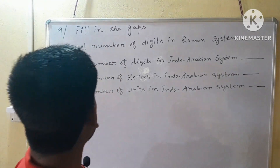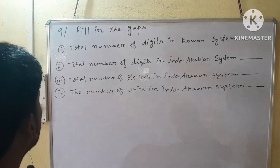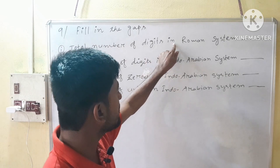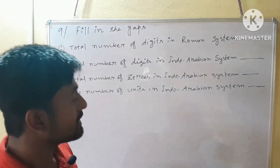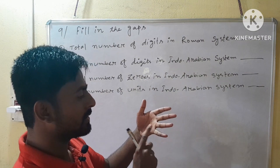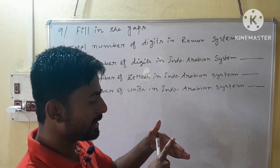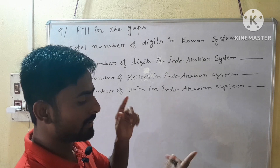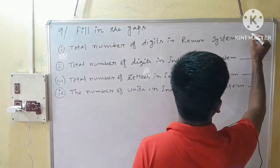Next question is question number 9 — fill in the gaps, meaning fill in the blanks. Roman number 1 says: total number of digits in the Roman system. The Roman digits are 1, 5, 10, 50, 100, 500, and 1000. So the total number of Roman digits is 7.